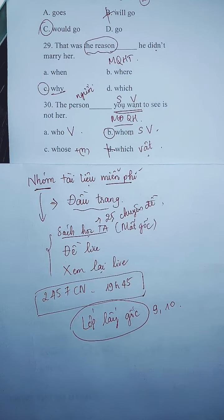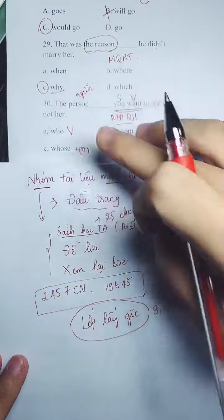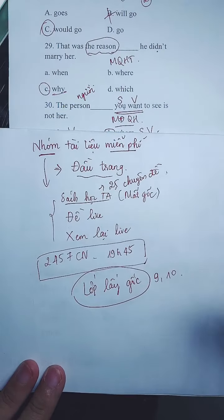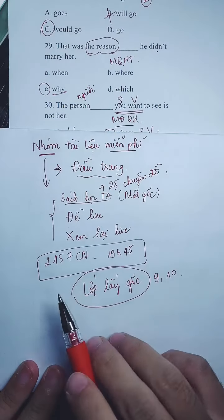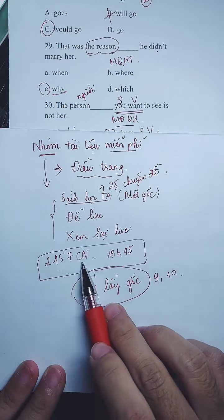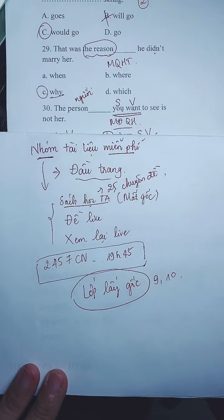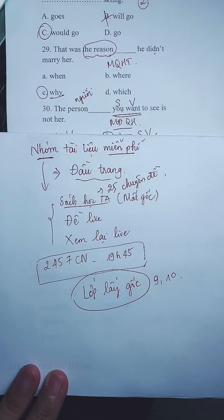Mình đã làm xong 30 câu. Chú ý lịch live: cô sẽ chữa 30 câu vào các tối thứ 2, 4, 5, 7, Chủ nhật. Những câu trong đề live là cô soạn và trích từ các đề kiểm tra thực tế. Tất cả bạn cấp 2, cấp 3 đều có thể học và có thể trúng trong đề kiểm tra.